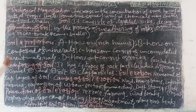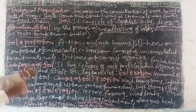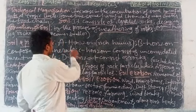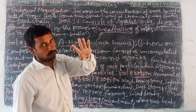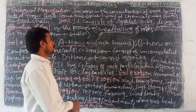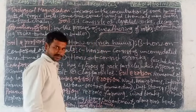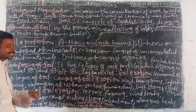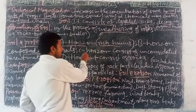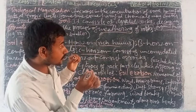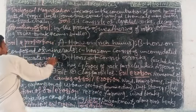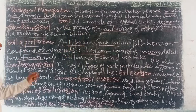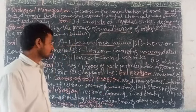Soil is divided into four horizons: A horizon, B horizon, C horizon, and D horizon. The A horizon contains rich humus. The B horizon is composed of minerals. The C horizon consists of unconsiderated parent materials, and the D horizon consists of rocks.